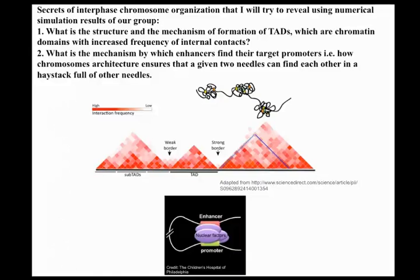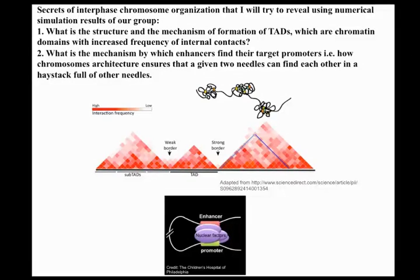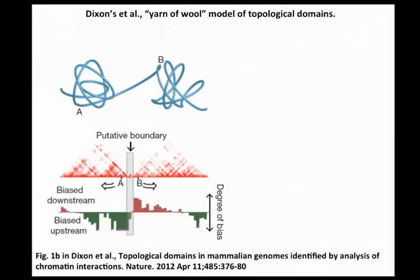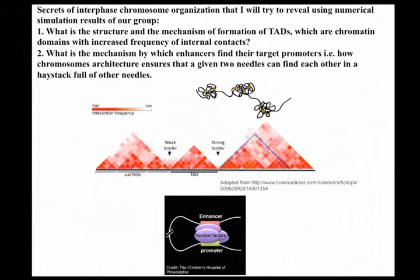The second secret I will try to discuss is: what is the mechanism by which enhancers find their target promoters? Enhancers are distal regulatory elements — they can be as far as a megabase from the promoter. For expression of developmentally regulated genes, it is required that enhancers come into contact with the target promoters. They are far away, they find each other in a very complex structure — it's like finding a needle in a haystack full of other needles.